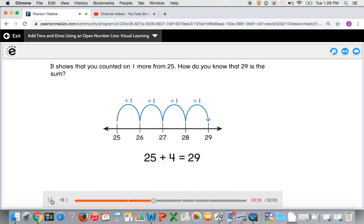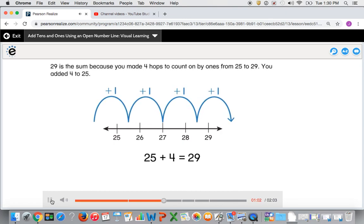How do you know that 29 is the sum? 29 is the sum because you made four hops to count on by ones from 25 to 29. You added 4 to 25.